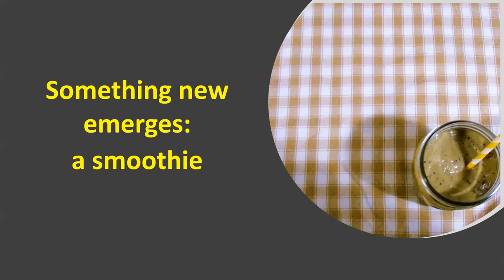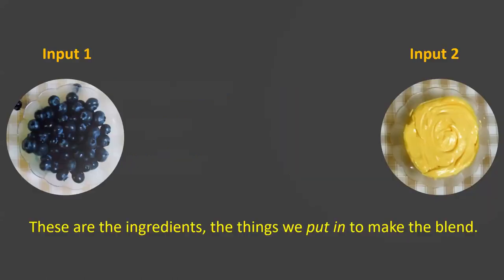And this is what happens in a conceptual blend. We have elements from different input spaces — at least two input spaces — that combine in a blended space. Different processes occur; compression occurs; and a new structure emerges. That structure is new — it's different from the input spaces. And that's exactly what we've just demonstrated.